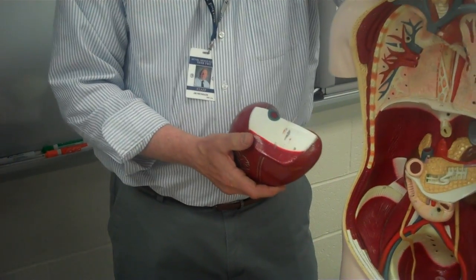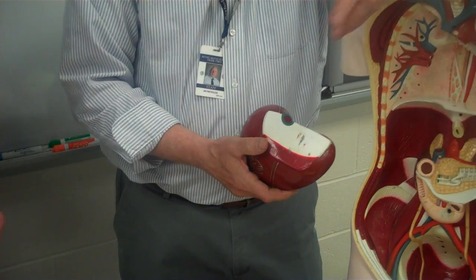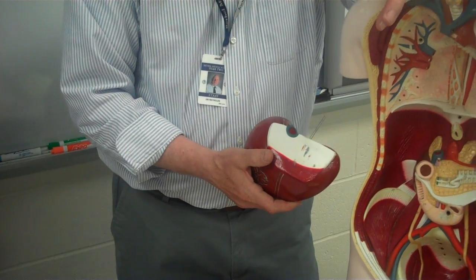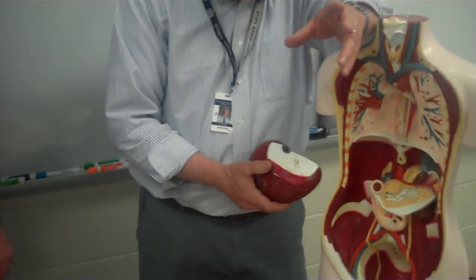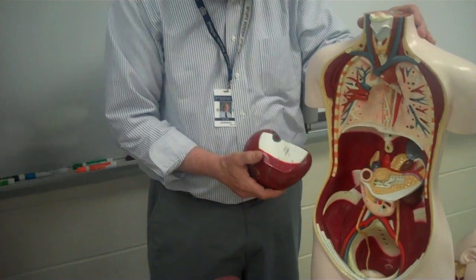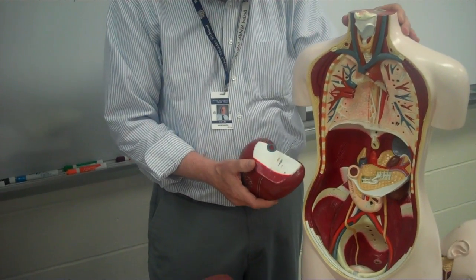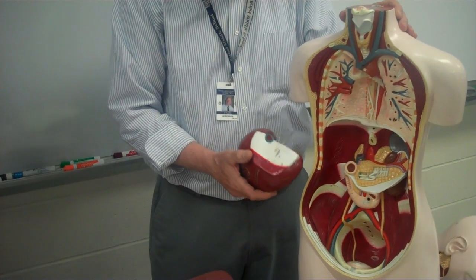So we call the mouth, the esophagus, the stomach, the small intestine, the large intestine, the rectum and the anus, we call that the alimentary canal or digestive tract. But there are other organs too that are not part of the digestive tract but are very important to digestion.